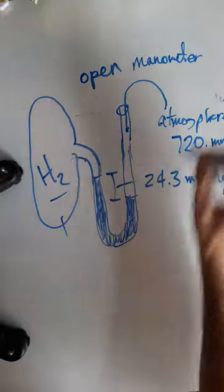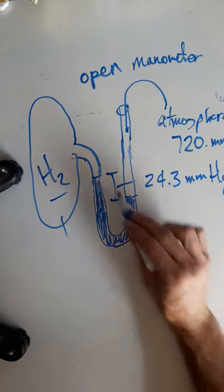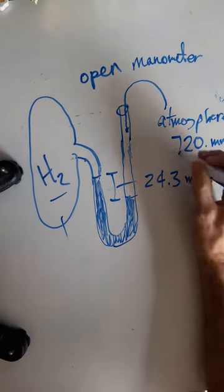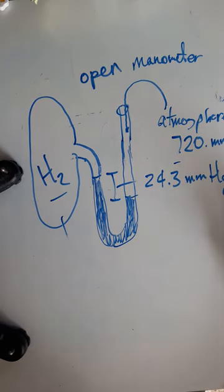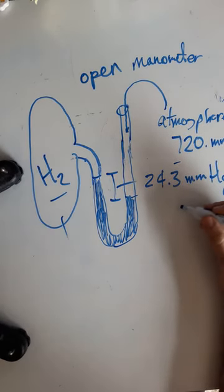Atmospheric pressure, that force being applied by the atmosphere is stronger than the gas side, we would subtract. And so if you subtracted 720 minus 24.3,